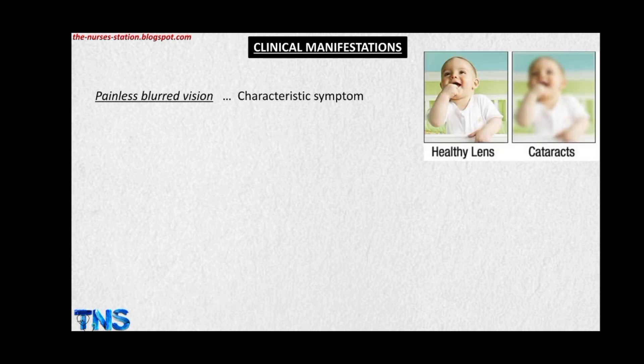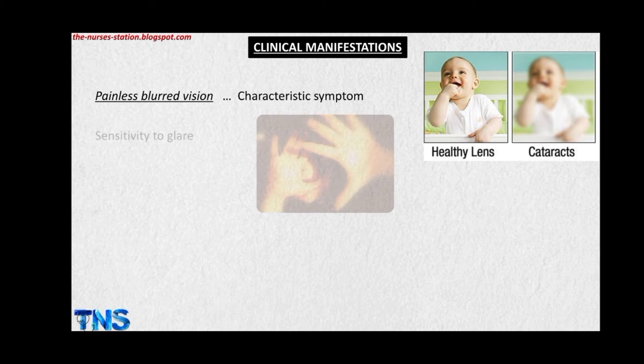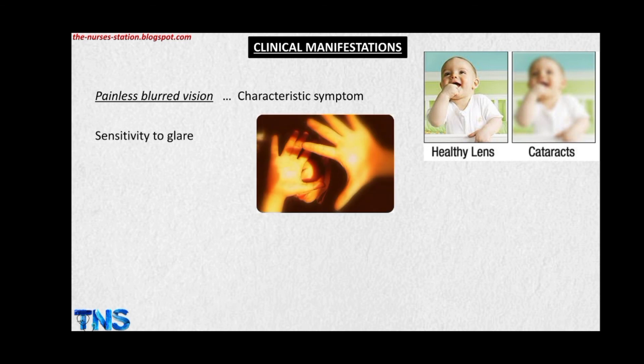The clinical manifestations: the first and most important clinical manifestation in cataract is painless blurred vision — it is the characteristic symptom. The patient doesn't usually experience pain but has blurred vision. There is also sensitivity to glare, diminished night vision, and dull or faded vision.